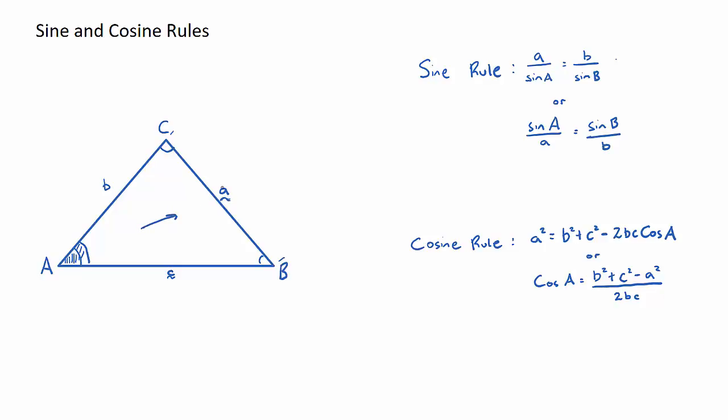If we do know those, so if we do know the angle and its opposite side, we will always be using the sine rule. If we don't know that pair of angle and opposite side length, we'll be using the cosine rule. So that's the general rule of thumb: Do I know an angle and its opposite side length? If so, I use the sine rule. If I don't know that, I'll need to use the cosine rule.